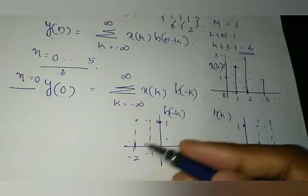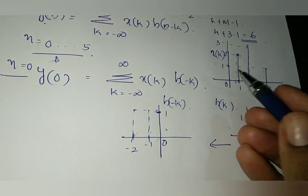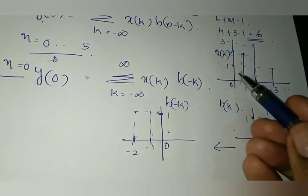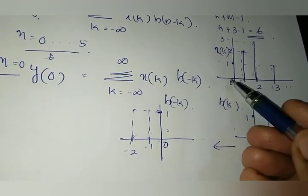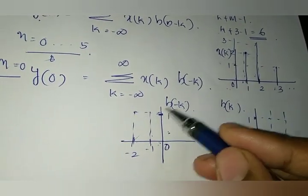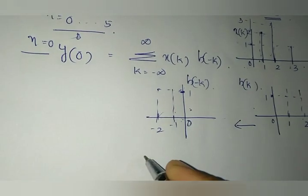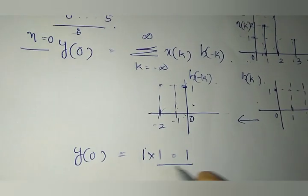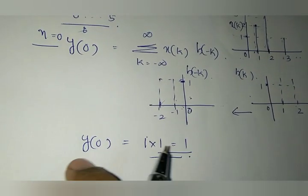In order to multiply these two signals you have to identify the common points. Here the only common point is 0. This signal does not have any values at 1, 2, 3, and h of minus k does not have values at minus 1. So there is only one common point which is 0. The value at point 0 is 1 into 1, which equals 1. So y of 0 is 1. This is your first linear convolution output.